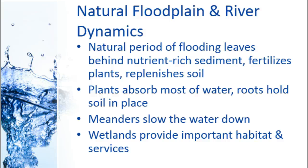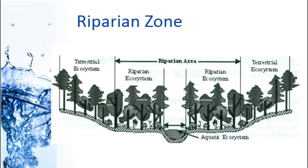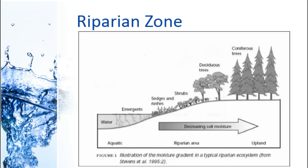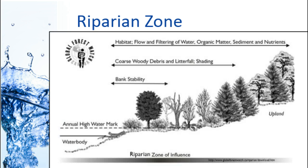In a natural ecosystem, lots of plants and trees absorb a lot of the water, and when it floods the roots of those trees hold the soil in place so it does not erode. There are areas called meanders where the river curves and that slows the water down, which again prevents erosion. We also have wetlands that help soak up water and provide important habitat. One important term that goes along with rivers is a riparian zone — this is the area around the river, which usually follows a particular pattern of species.